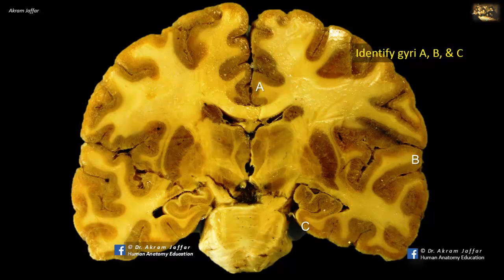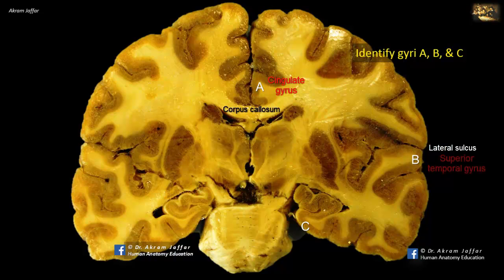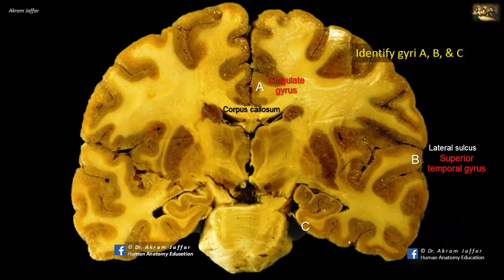Identify gyri A, B, and C. The location of the three gyri is shown on a coronal section of the brain. A is located on the medial side of the cerebral hemisphere, just above the corpus callosum. It is the cingulate gyrus. B is located on the lateral surface of the cerebral hemisphere, just inferior to the lateral sulcus. It is the uppermost gyrus of the temporal lobe, that is, the superior temporal gyrus. You can trace the other gyri, middle and inferior temporal gyrus, as well. C is located on the inferior surface of the cerebral hemisphere, most medially, and it is the parahippocampal gyrus.